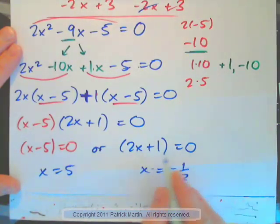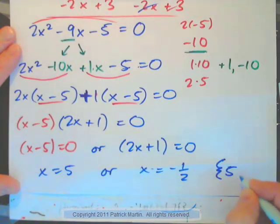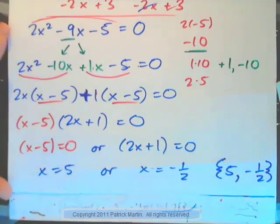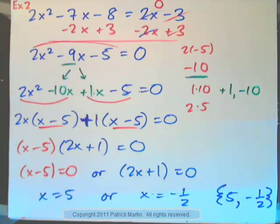You can solve that. x is 5 or negative 1 half. As a solution set, that would be 5 comma negative 1 half.